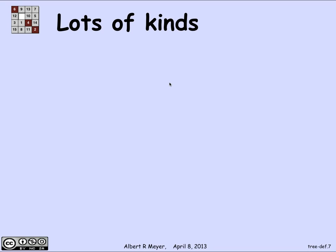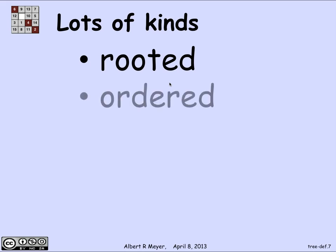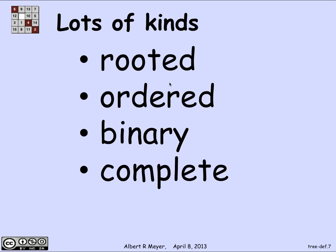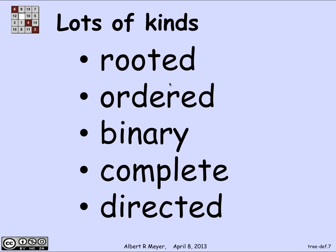In addition to these applications, there are many different kinds of trees. There are rooted trees with a designated vertex called the root. There are ordered trees where the exit edges from a vertex have a distinct order — first, second, third, or left and next leftmost. There are binary trees where each vertex has exactly two ways out, or no ways out if it's a leaf. There are complete trees, and there are directed trees where edges have a direction as in a digraph.